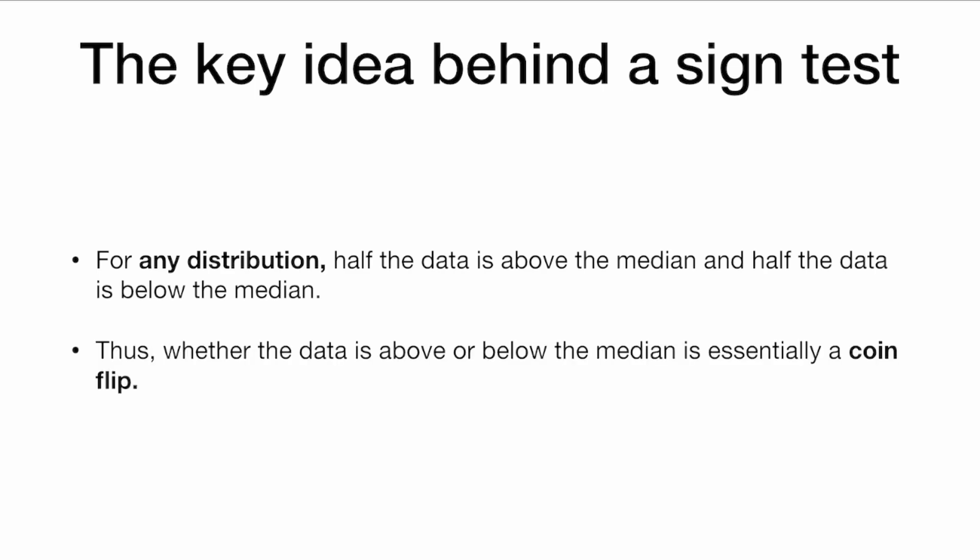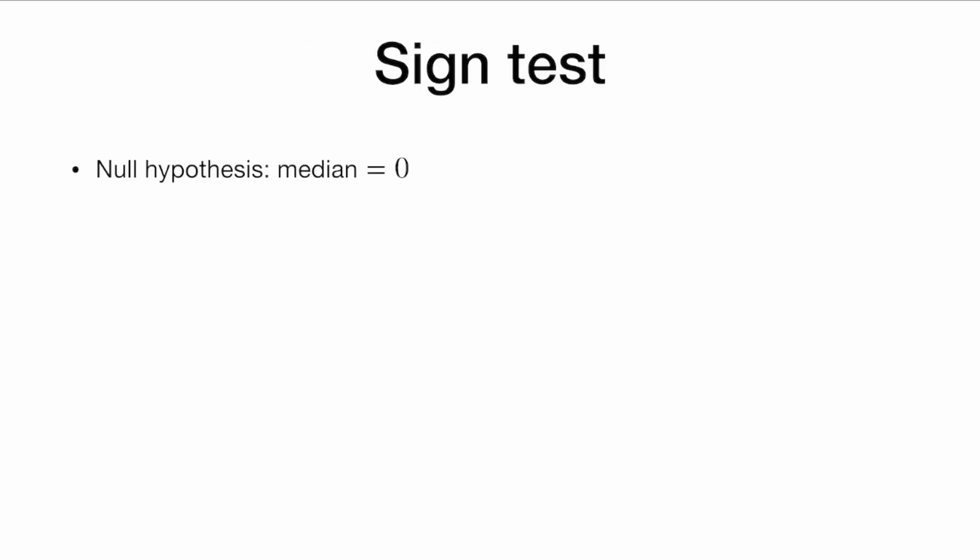Because half the data is above the median and half of the data is below the median, whether the data is above or below the median is essentially a coin flip for any distribution. Okay, so let's do a sign test.